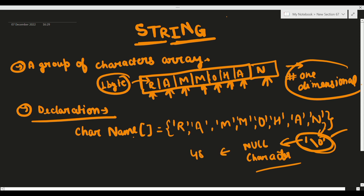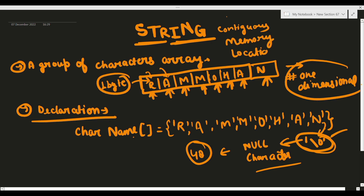Memory location में जब इसको store करते हैं तो यह भी continuous memory locations में store होते हैं - जैसे array continuous memory location में store होती है, same concept इसका भी है। जैसे 1 byte ले रहा है तो मालिया address हो गया 625, तो next वाले का 626, next वाले का 627, उसके next का 628 - ऐसे करके एक एक byte address लेता है, एक एक byte बढ़ता चला जाएगा।